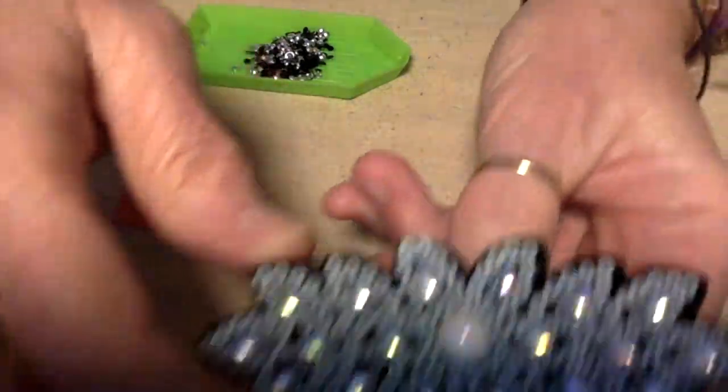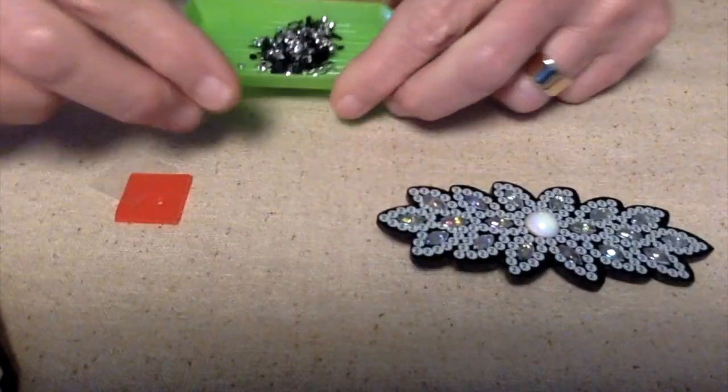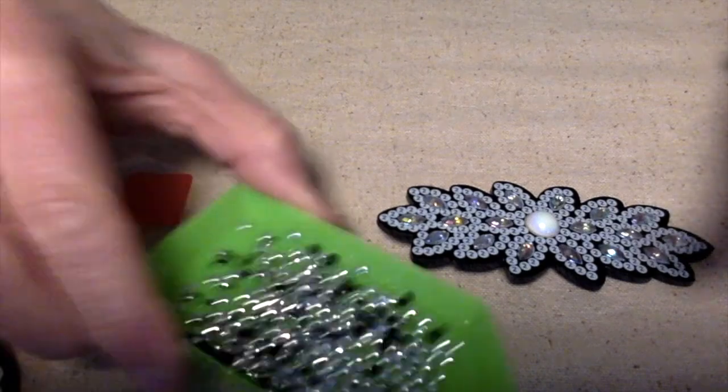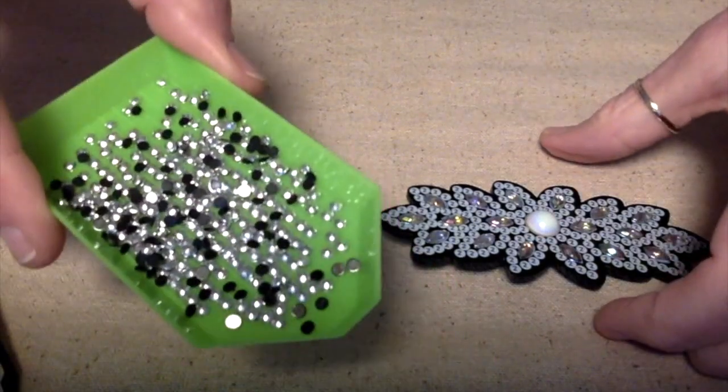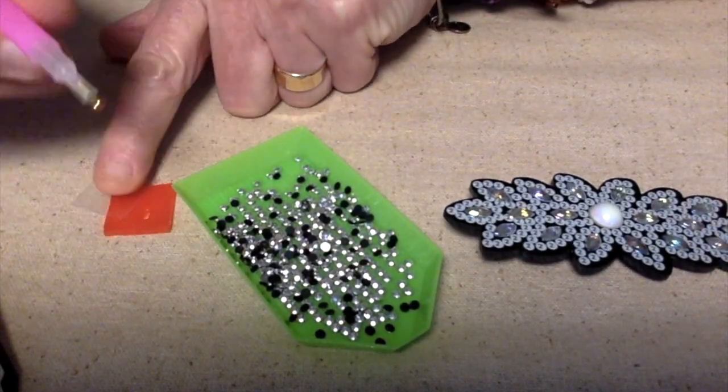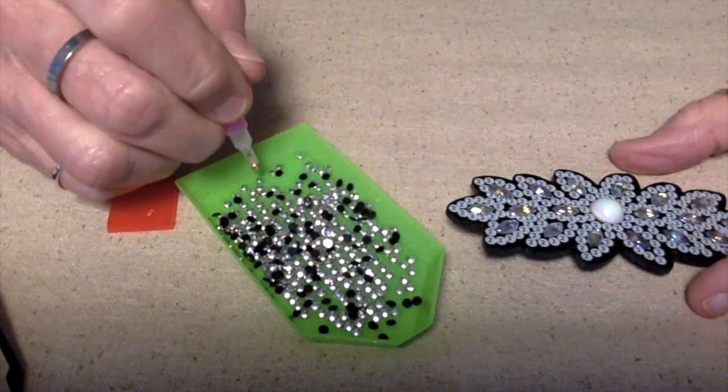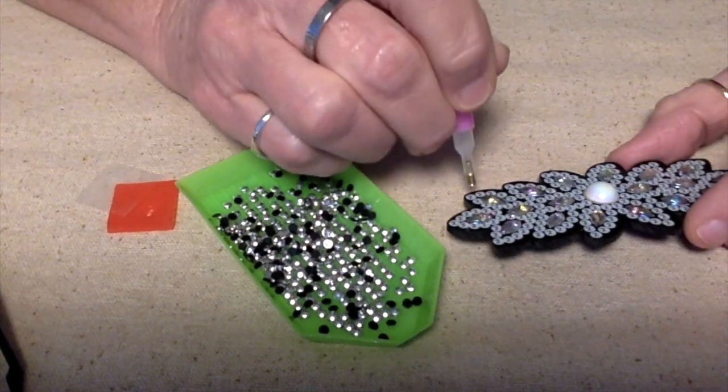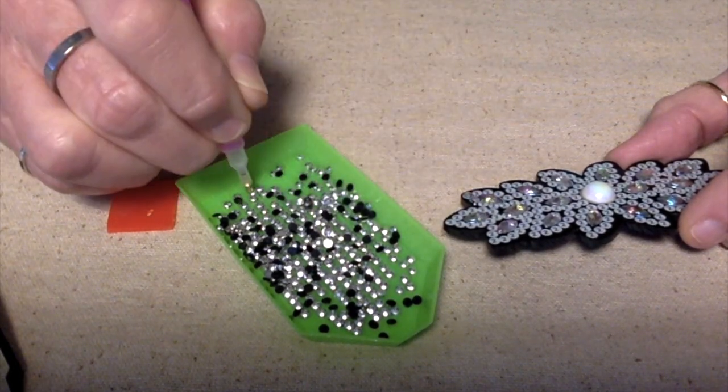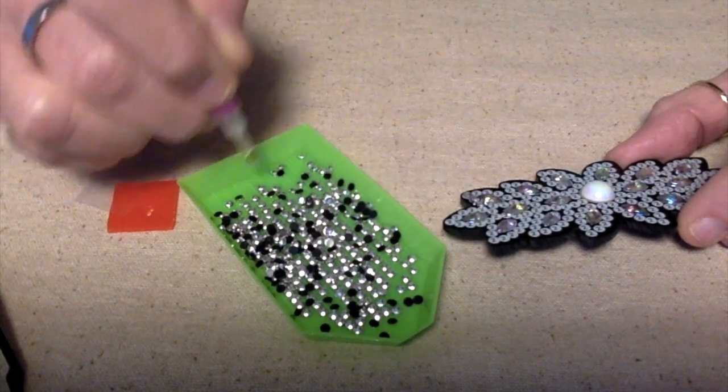There weren't a whole lot of those oval sequins and that went pretty quick. Now I got my little round ones. They're actually silver; the back of them are just shining black. Just pick them up with the wax and stick them in the right area on the clip. This actually was pretty quick to do.